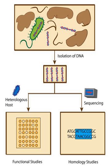Once a large library of variants is created, selection or screening techniques are used to find mutants with a desired attribute. Common selection and screening techniques include fluorescence-activated cell sorting, mRNA display, phage display, or in vitro compartmentalization. Once useful variants are found, their DNA sequence is amplified and subjected to further rounds of diversification and selection. Since only proteins with the desired activity are selected, multiple rounds of directed evolution lead to proteins with an accumulation of beneficial traits.